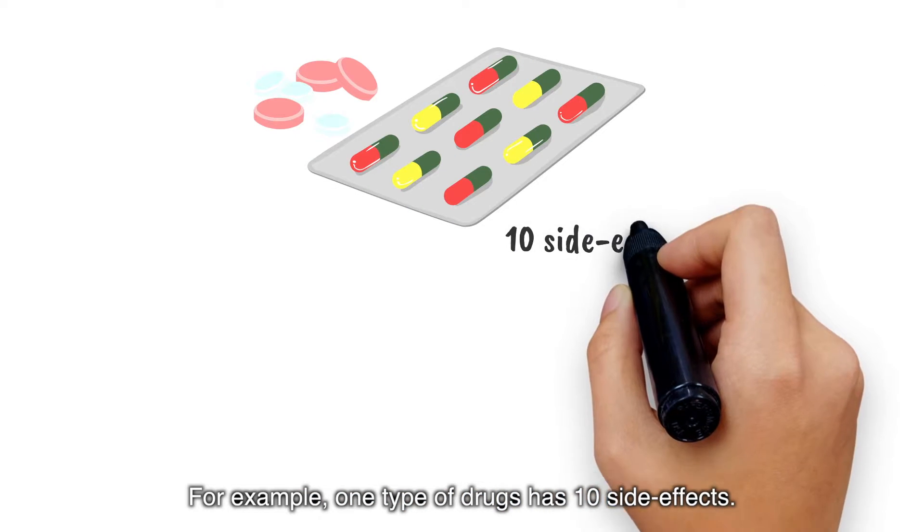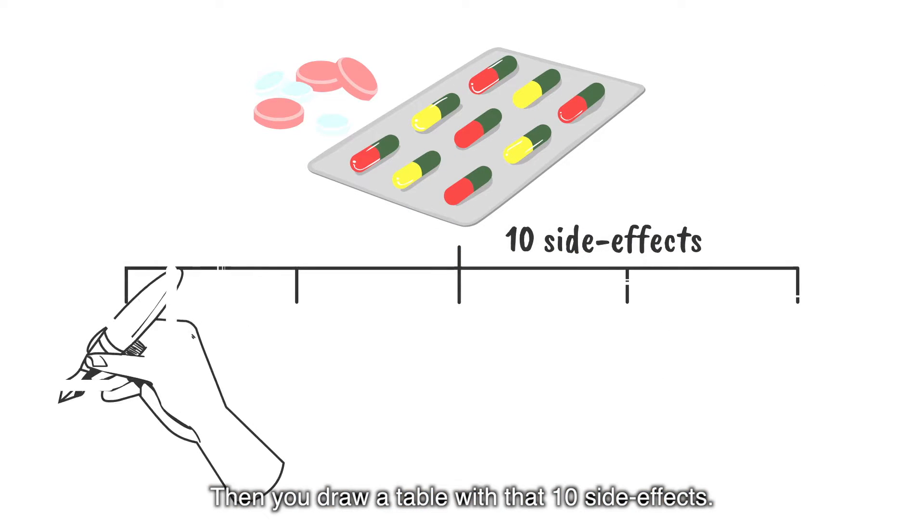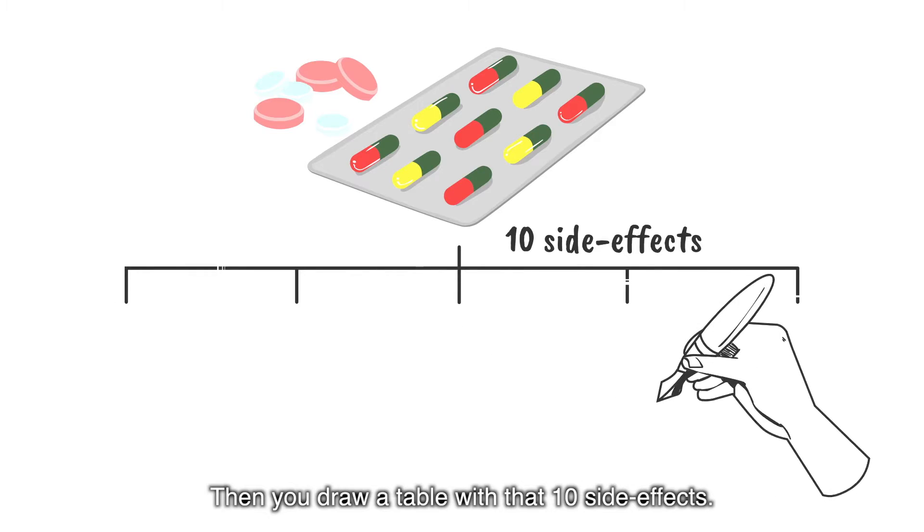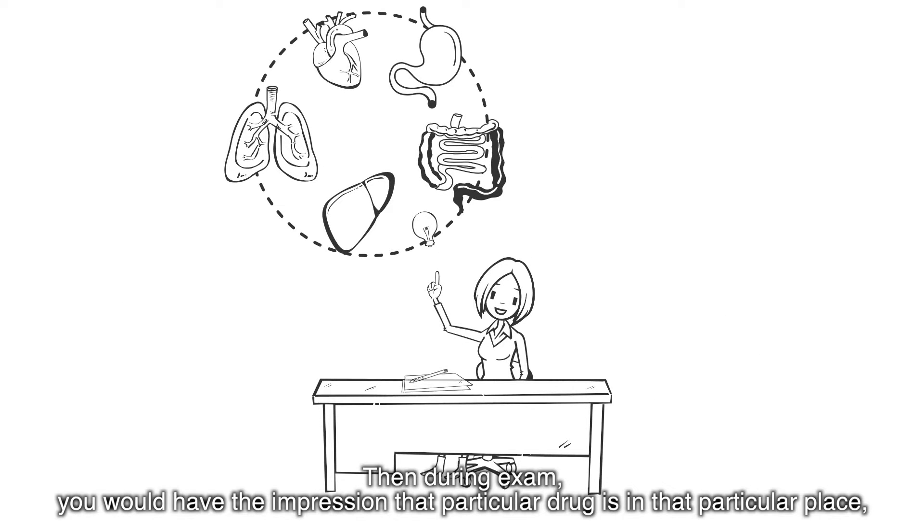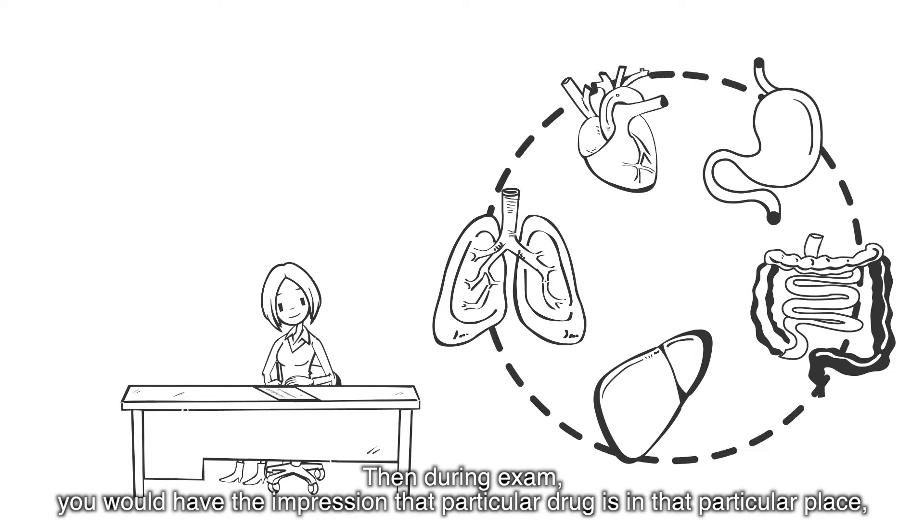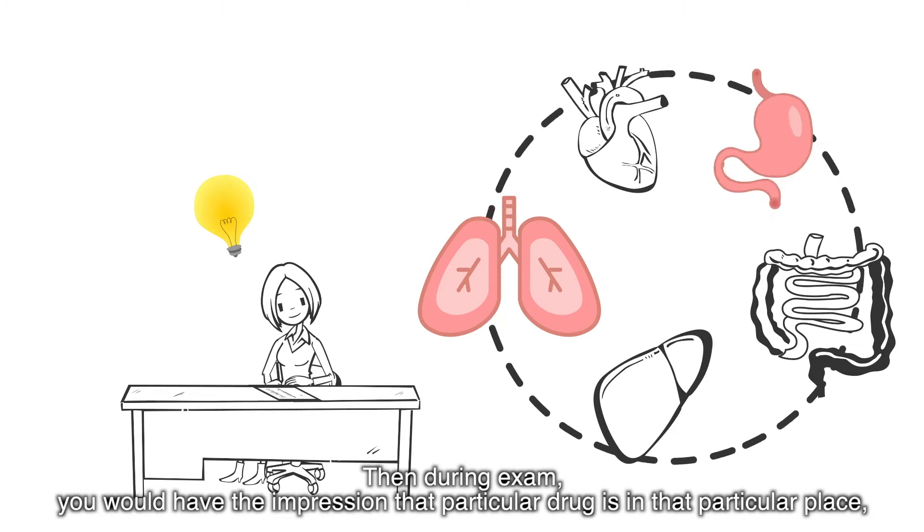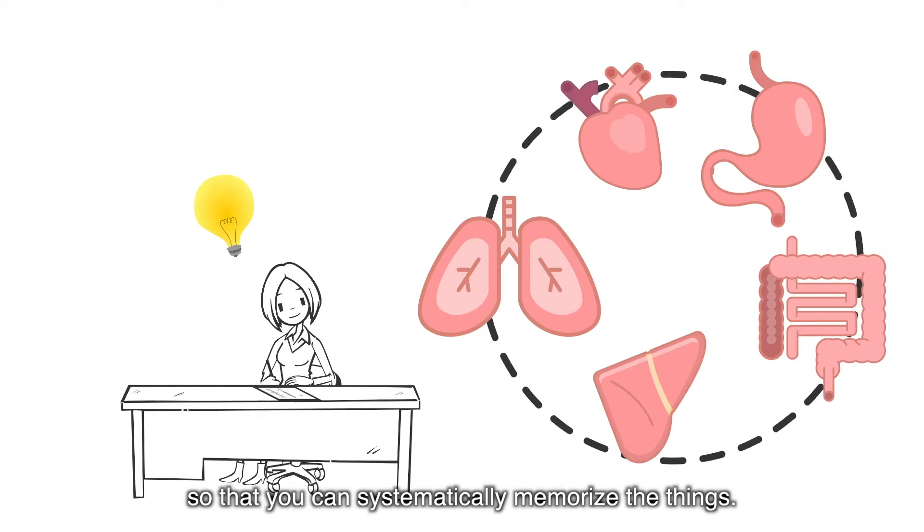For example, one type of drug has 10 side effects. Then you draw a table with those 10 side effects, using pictures to memorize and visualize. Then during the exam you would have the impression that particular drug is in that particular place, so that you can systematically memorize the things.